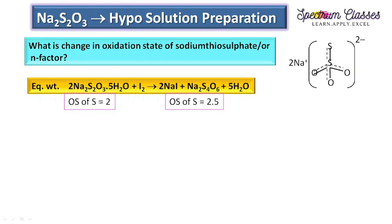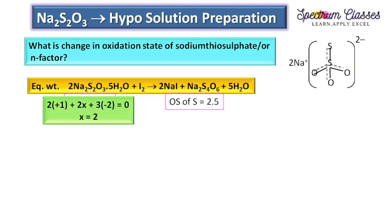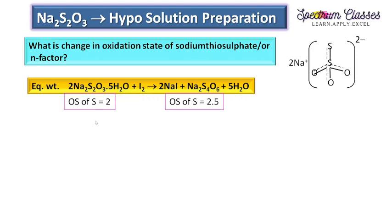If you are a beginner and don't know how to calculate the oxidation state, here is how to solve it. Consider the subscripts for each atom: for sodium it is 2, so 2 multiplied by +1 (oxidation state of sodium), plus 2 times x (oxidation state of sulfur), plus 3 times −2 (oxidation state of oxygen) equals 0, because there is no charge on the molecule. Solving this equation, we get x = 2.